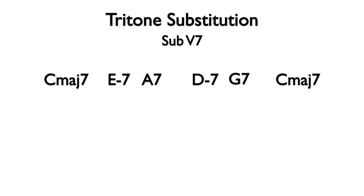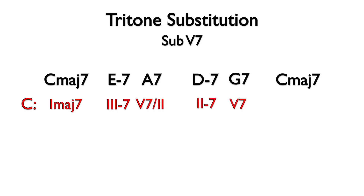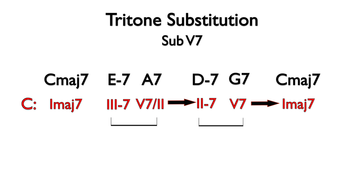Here is a progression that uses a primary and secondary dominant chord. The analysis in the key of C major is: I major 7, 3 minor 7, V7 of 2, 2 minor 7, V7, and 1 major 7. We can add arrows for the resolution of the V7 and bracket E minor to A7 and D minor to G7 as related two chords.